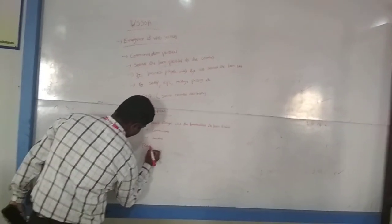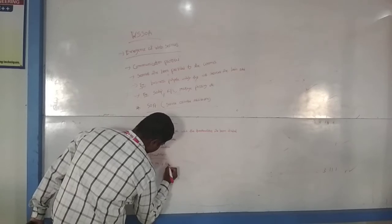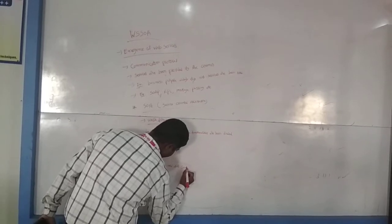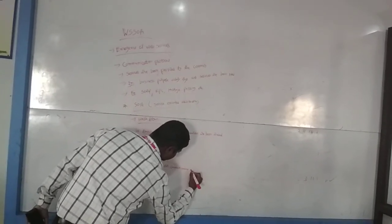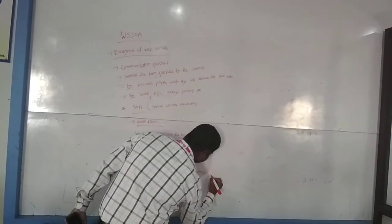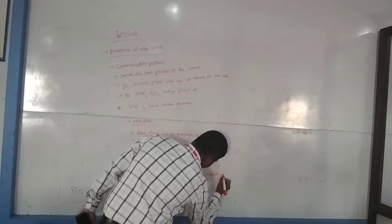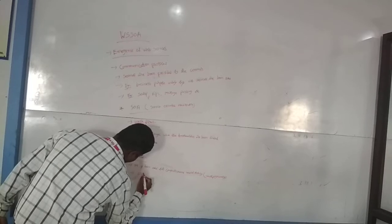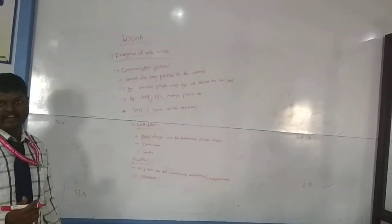Next, what are the features? The features: SOA is being used for computing and multitasking, or multi-programming. Next feature is orchestration.